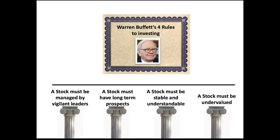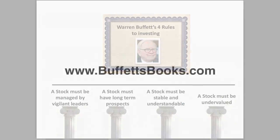So in the next few lessons, we're going to go through each one of these pillars and rules, and we're going to learn how Warren Buffett executes each one of them. Remember, all four of these rules have to be met in order for him to invest in a stock — you can't have just one rule met and still invest. We're going to move into the next lesson, which will be understanding how a stock must be managed by vigilant leaders.